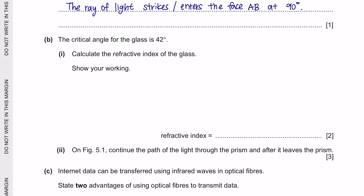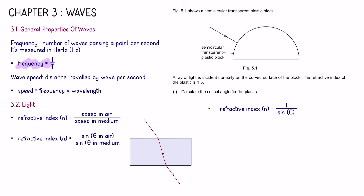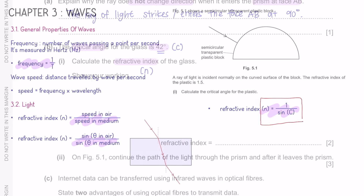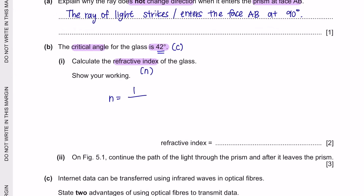Question B: The critical angle for the glass is 42°. Calculate the refractive index of the glass. The formula relating refractive index and critical angle is n = 1/sin C. Substituting C = 42° gives a refractive index of 1.5.